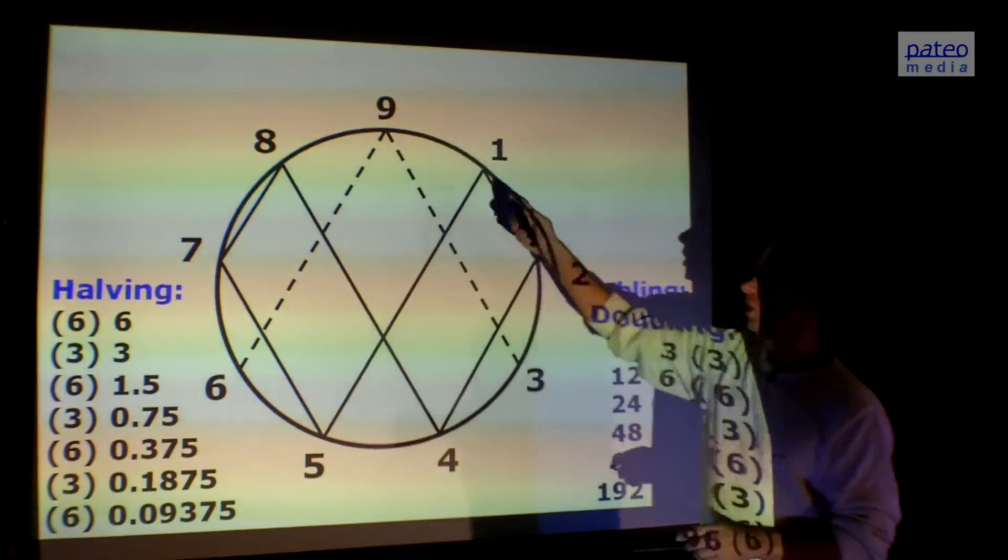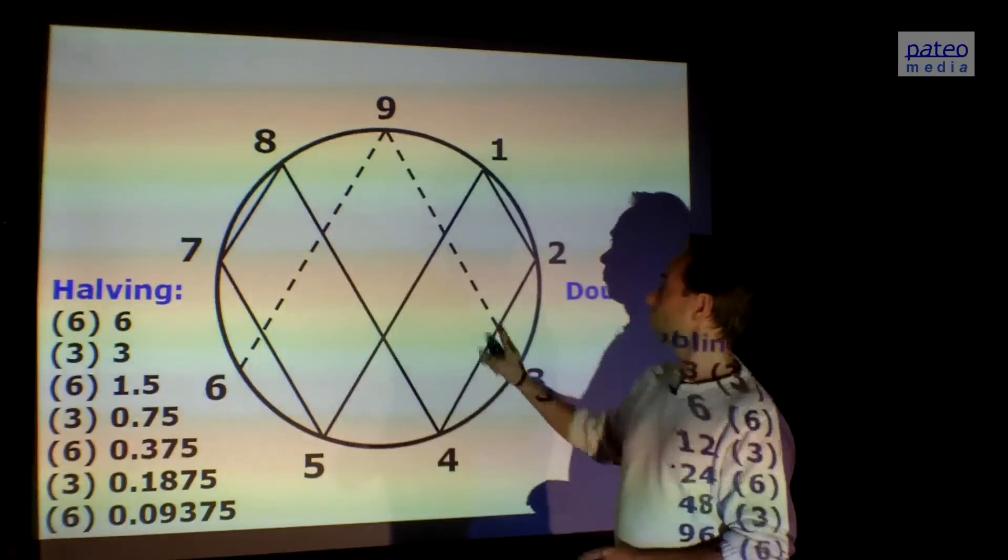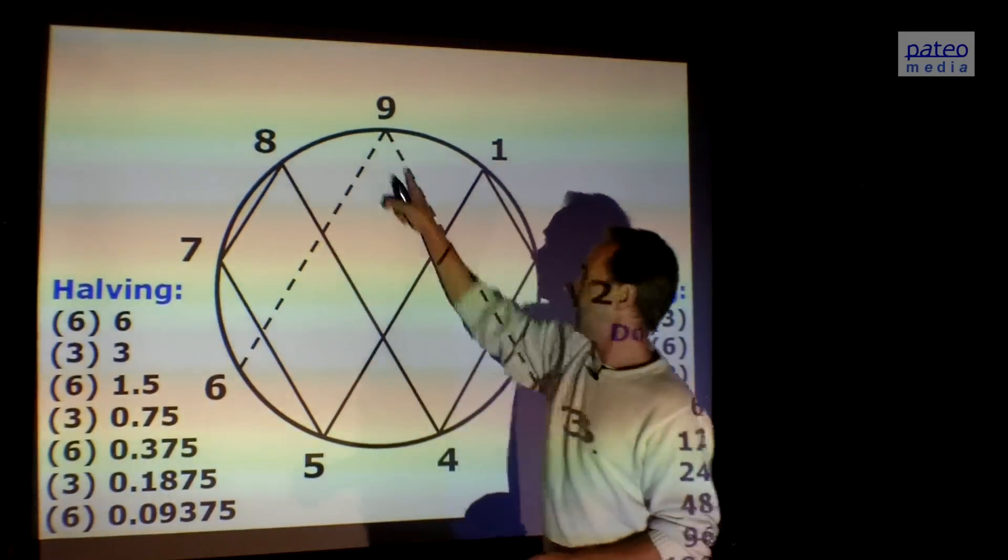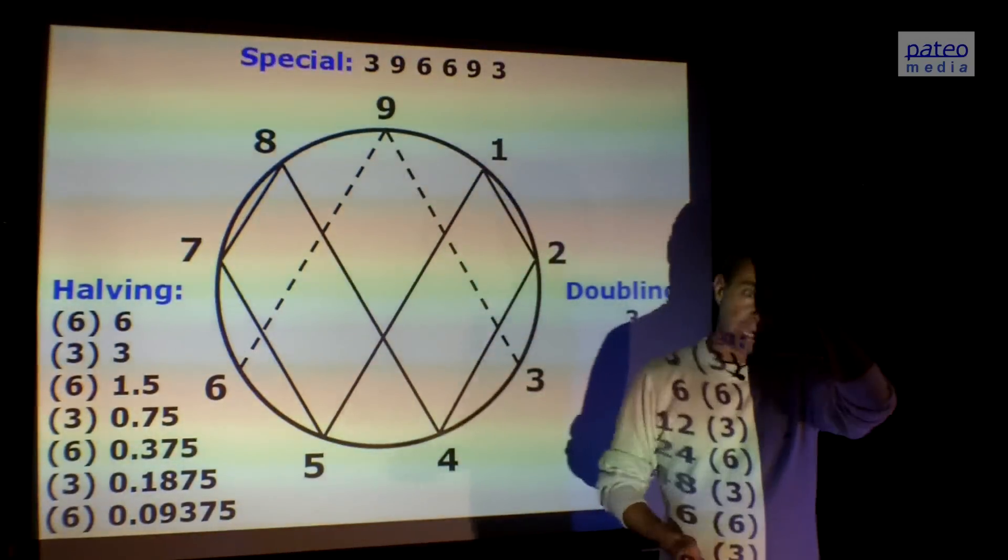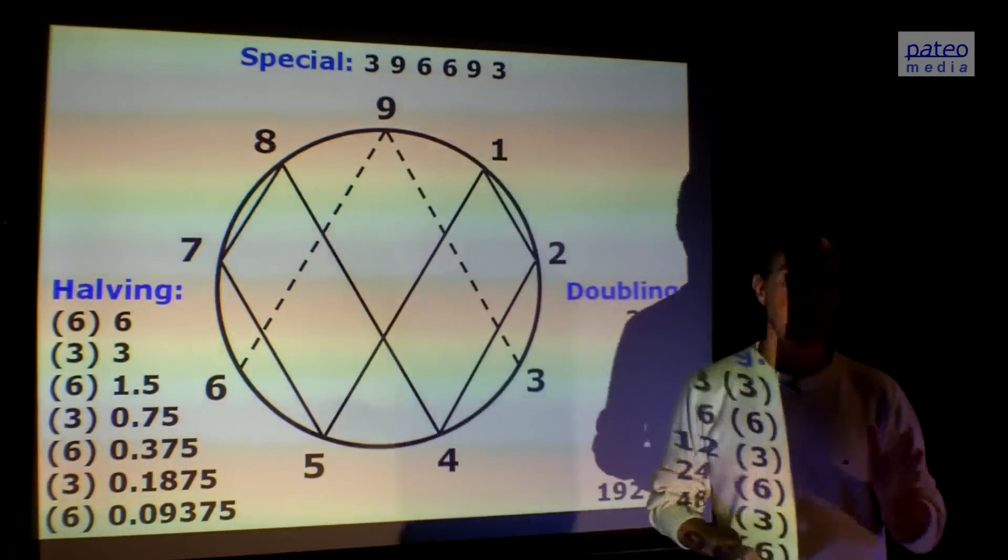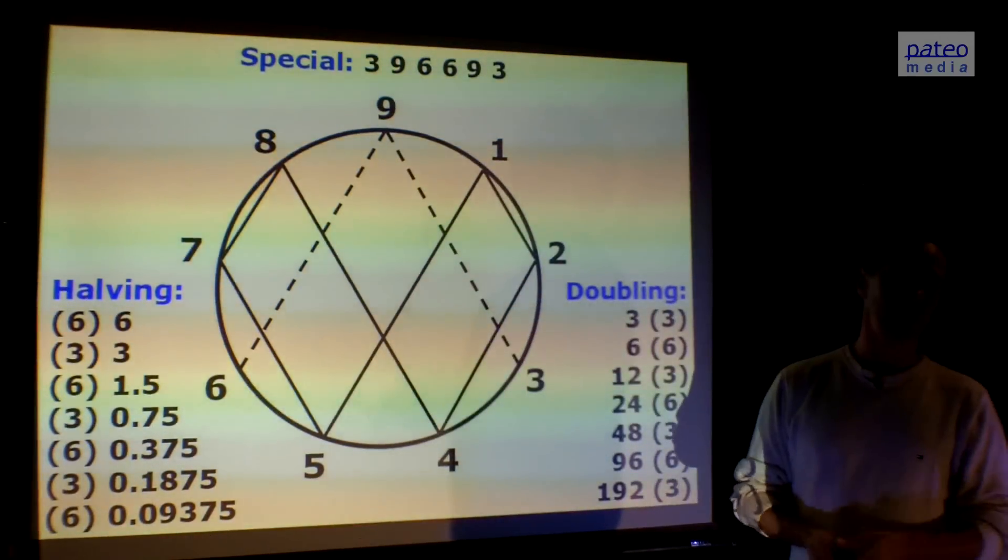The nine plays a special role because it's not jumping directly. It always has to go through the nine and then goes here, and then through the nine and back. So it's this kind of rhythm. That's the special rhythm of three, six, nine, six, nine, three. Three, six, nine, six, nine, three. Also an infinite rhythm.